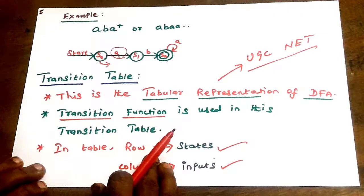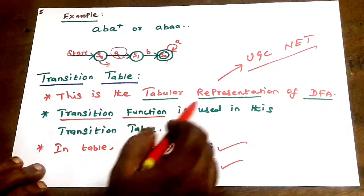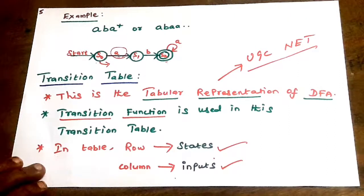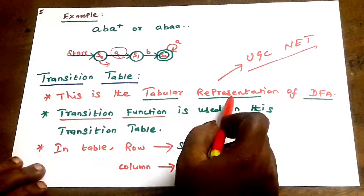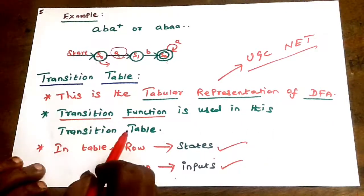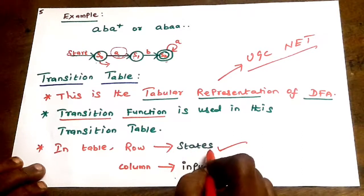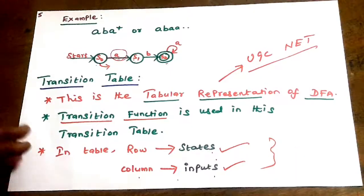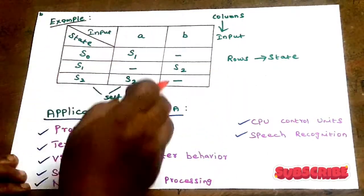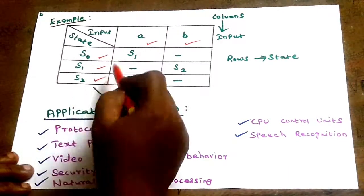Next is the transition table. It is the tabular representation of DFA — Deterministic Finite Automata. DFA can be represented in graph format as a transition diagram, or in tabular format as a transition table. The rows represent the states S0, S1, S2, and the columns represent the input symbols A and B.